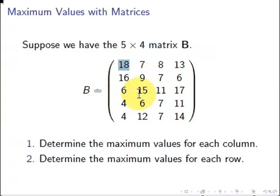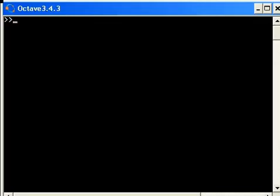Look at this second column. 15 is the maximum value of that column, but 17 is the maximum value of the row that that is on. So anyway, what we're going to do is just go to Octave. So I have my matrix here, B.